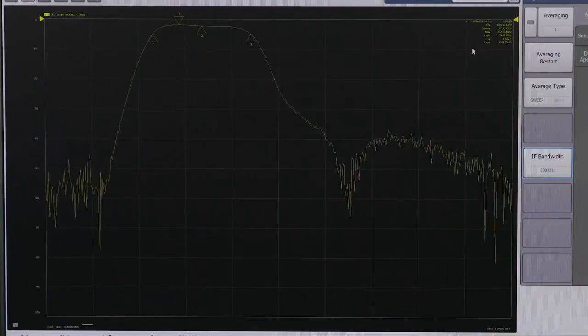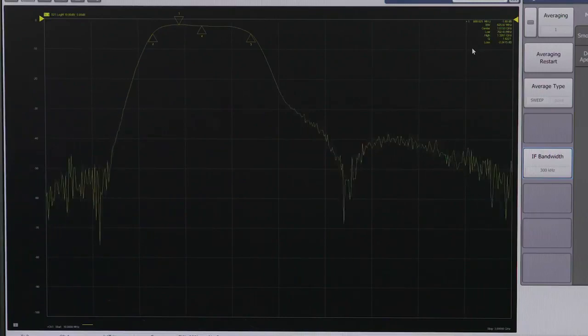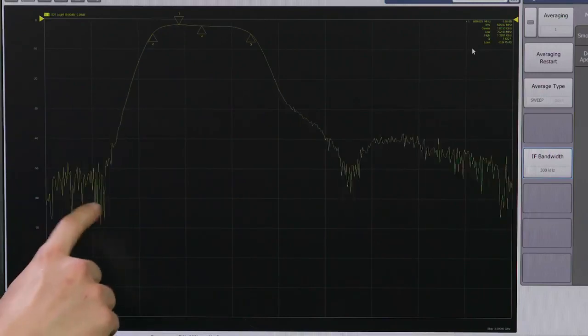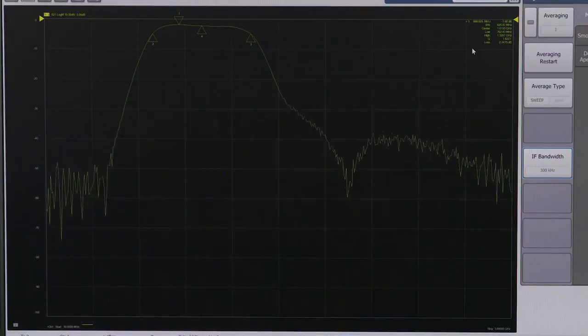However, the tradeoff is the higher the IF bandwidth is set, the more random noise will be introduced to the measurement. You can see that increased noise here in the rejection bands below 350 MHz or above 2 GHz.